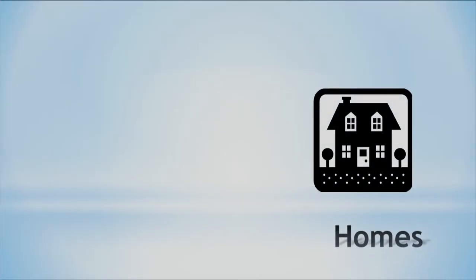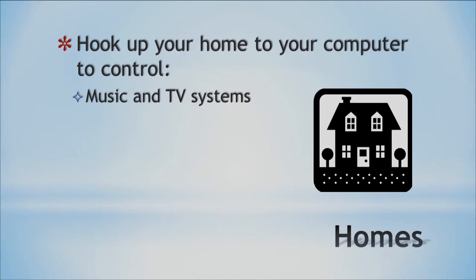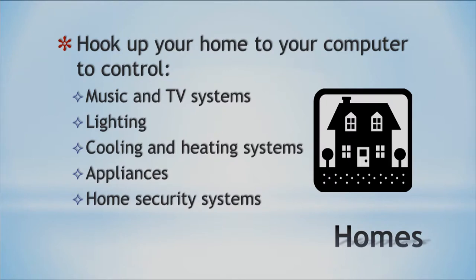Our next topic is homes and computers. In a high-tech home you might have things like music systems, TV, and remote controls. There are all these different systems to control, all the way from lighting, cooling, and heating. Appliances like microwaves also have computers in them — you can program a microwave. Home security systems are also big these days.